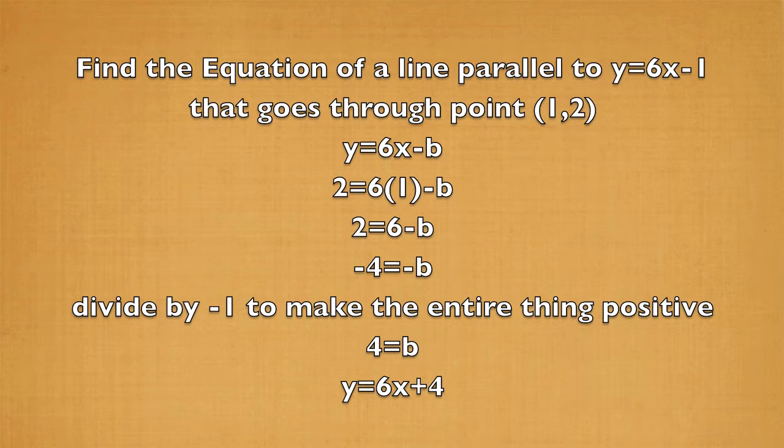So first, you would write y equals 6x minus b. Because you're trying to find the b, it is unknown. Then you would plug in the point into the line equation. The 1 is the x and the 2 is the y, so you plug them into the x and y spots. So it would be 2 equals 6 times 1 minus b. Multiply 6 and 1, and you would have 2 equals 6 minus b. Subtract 6 from both sides and you would get negative 4 equals negative b. Then divide by negative 1 to make the entire thing positive. So b equals 4, and your parallel line would be y equals 6x plus 4.